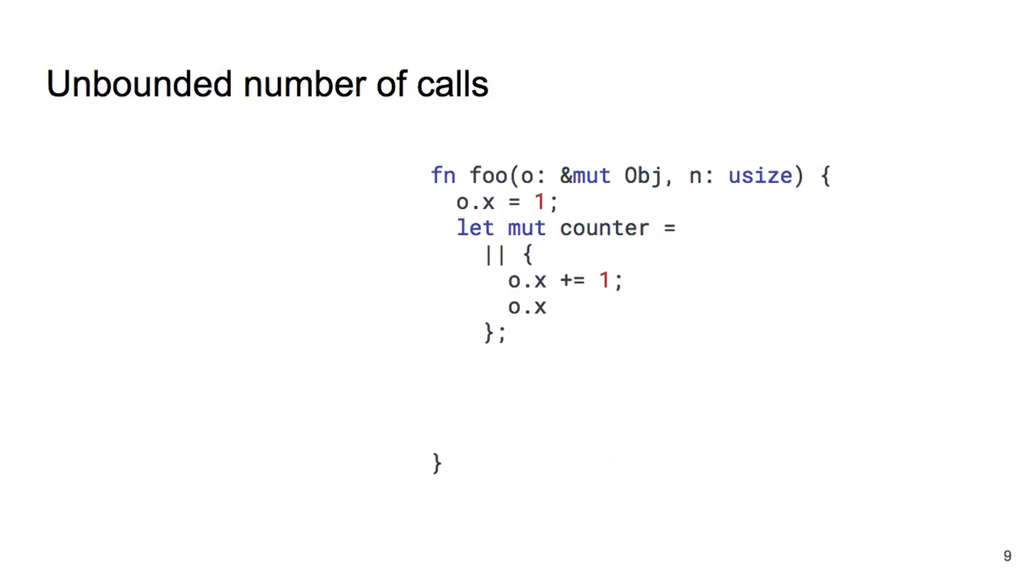Let's get back to closures and some of the issues we addressed with our paper. Once again we see the foo function with the counter closure. This time we will call the function twice, storing the result in values a and b. In between these calls we add a for loop which will simply call the closure n times, where n is an additional argument to the foo function. Finally we want to assert that b, the result of the last call to the closure, is greater or equal to a, the result of the first call to the closure. This assertion will always succeed, but we want to prove this statically.